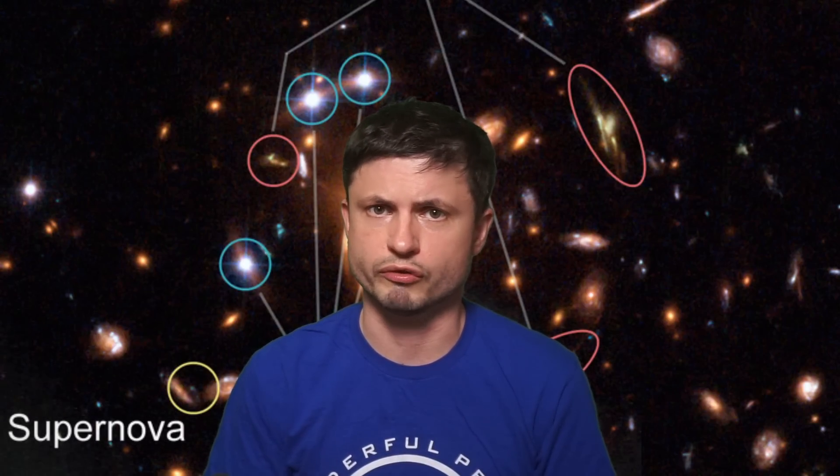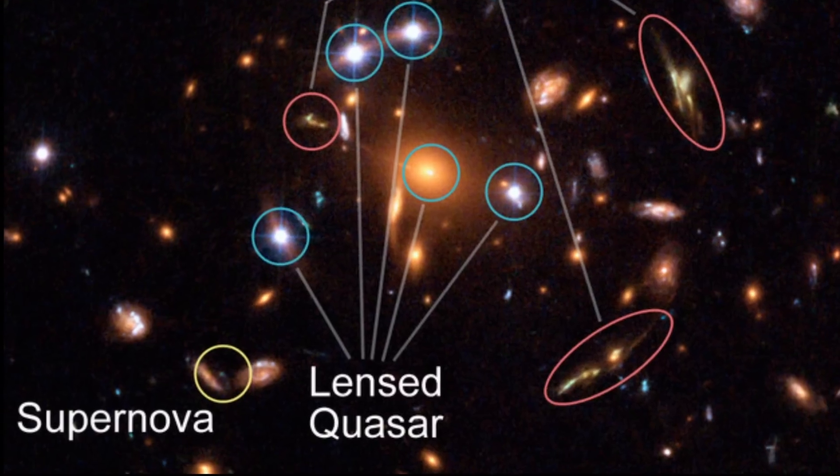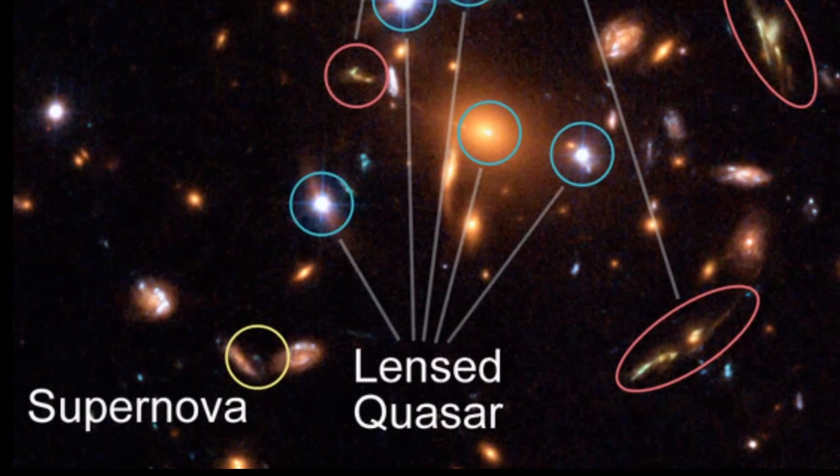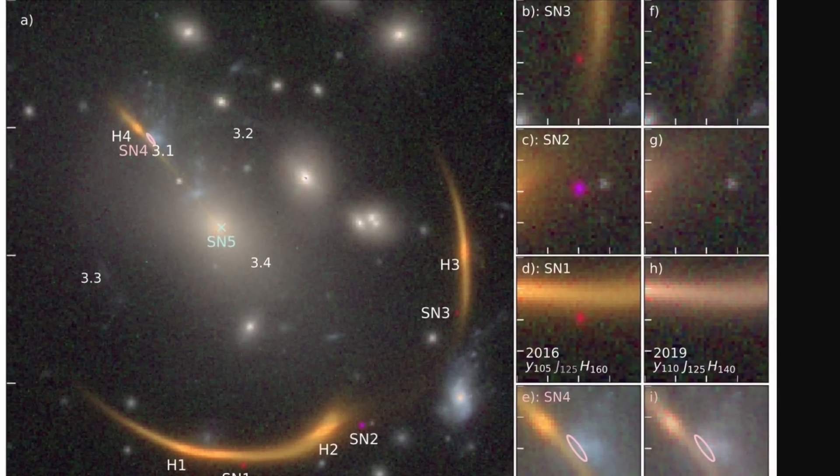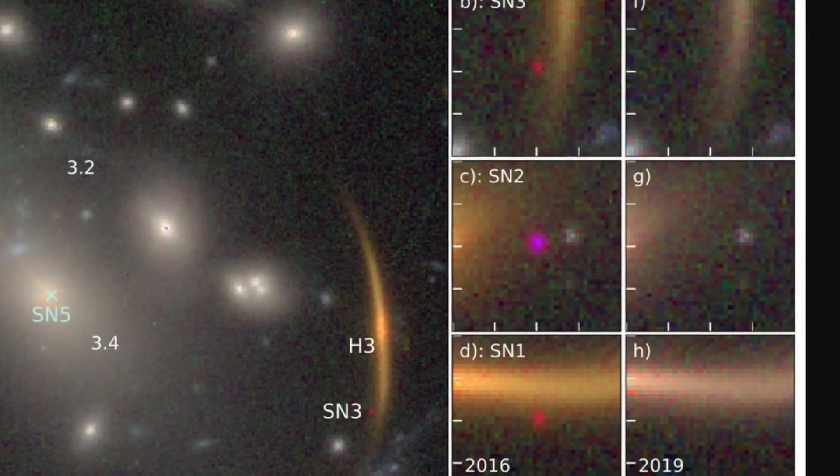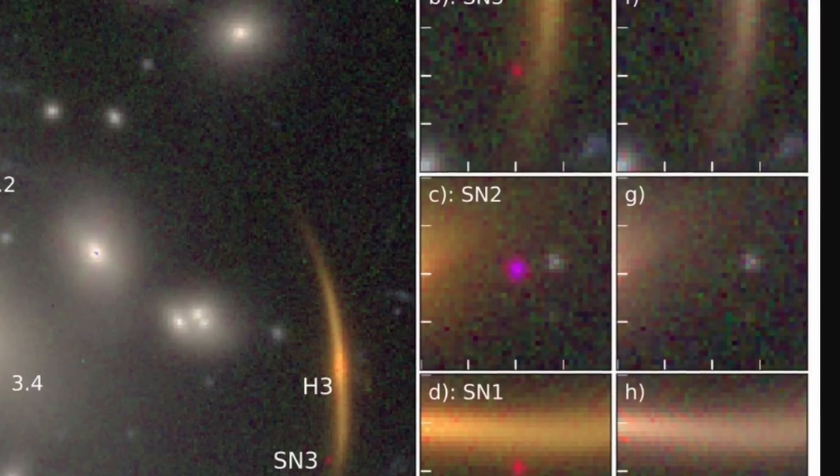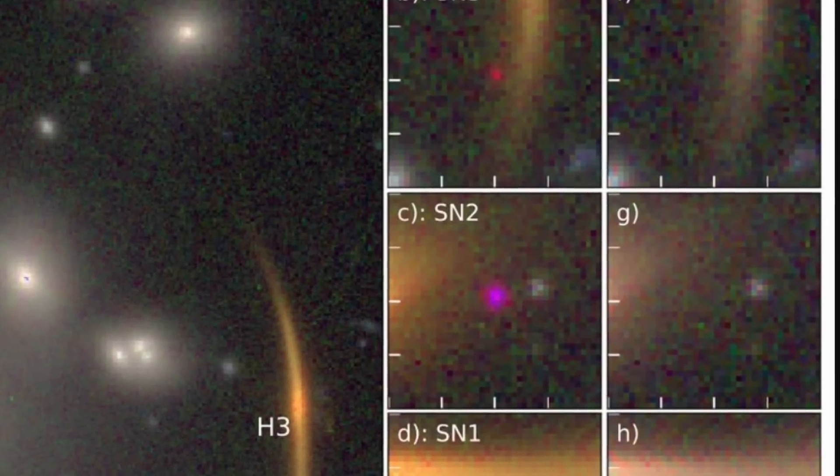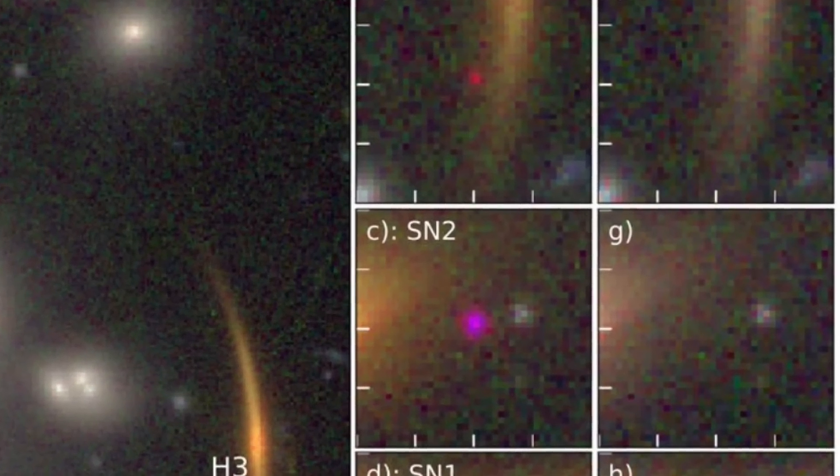But, intriguingly enough, they've also noticed a supernova. And that's actually what makes these particular studies and these particular lenses so exciting. We've discussed something similar in one of the previous videos in the description, but there are also several different supernovae that have been detected in gravitational lenses, allowing us to literally see the same image over and over again.